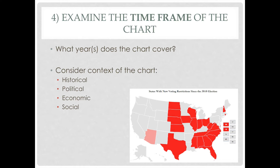Number four: it's wise for us to examine the time frame of the chart. What year or years does it cover? Hopefully that's in the title or on the axes. We'd want to look at the context — if this chart covers a certain year, what was going on historically then? What was going on politically, economically, and socially? This is where cross-referencing interdisciplinary questions from government, economics, or history class gives us the background we might need to interpret a graph, chart, or map.